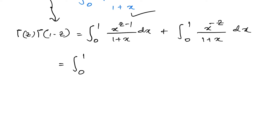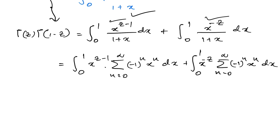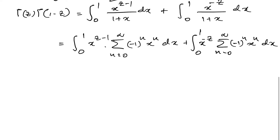For each integral, we use the series representation 1/(1+x) = sum from n=0 to infinity of (-1)^n · x^n. So the first integral becomes the integral from 0 to 1 of x^(c-1) times the sum of (-1)^n · x^n dx, and the second becomes the integral from 0 to 1 of x^(-c) times the same series dx.